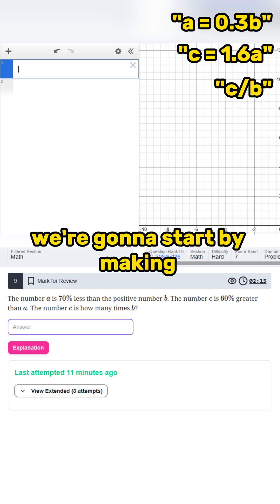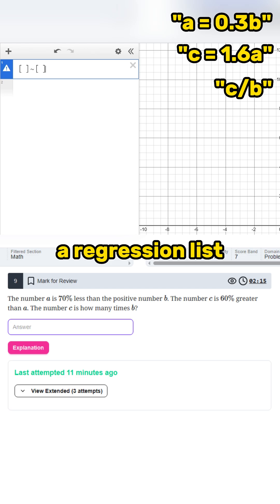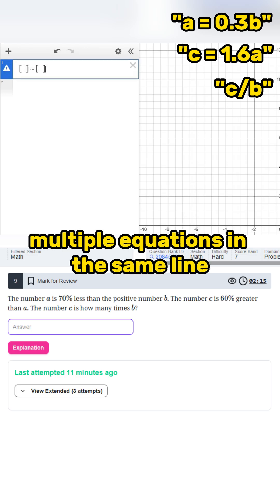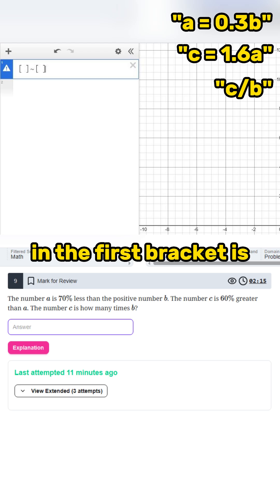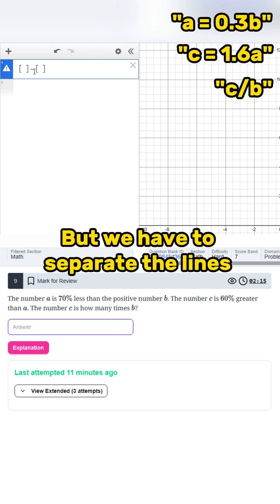Once we're in Desmos, we're going to start by making two sets of brackets and separating them with a tilde. This is called a regression list and creates multiple equations in the same line. Essentially, the first line in the first bracket is set equal to the first line in the second bracket. And it's the same idea in the second line of each bracket, but we have to separate the lines with a comma.